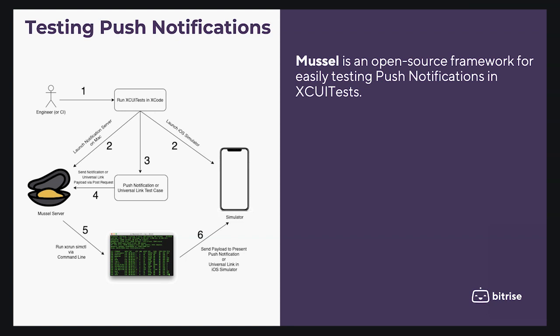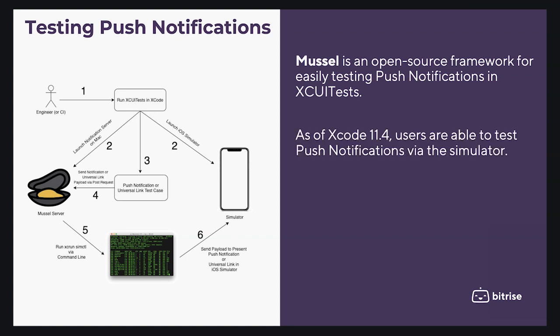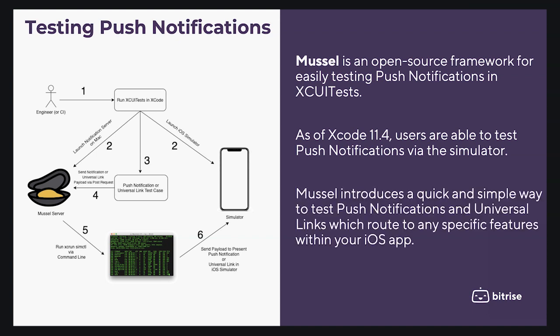One of the frameworks that help you test push notifications in iOS is Muscle. Muscle is an open-source framework for easily testing push notifications in XCUITest. As of Xcode 11.4, users are able to test push notifications via simulators. Muscle introduced a quick and simple way to test push notifications and universal links, which route to any specific features within your iOS apps.